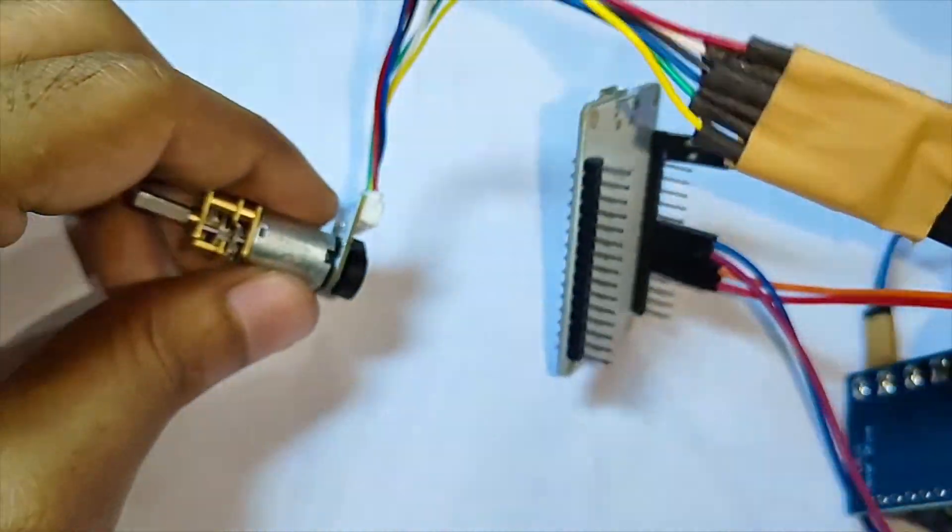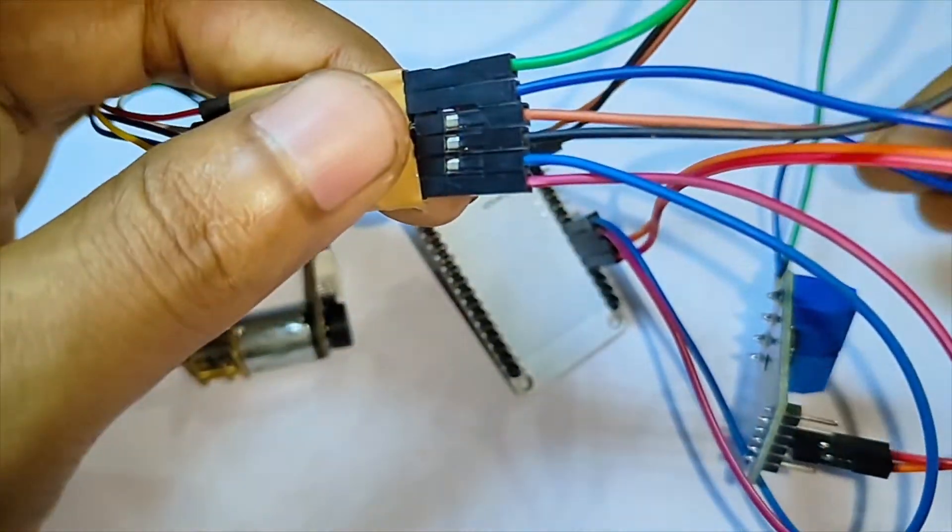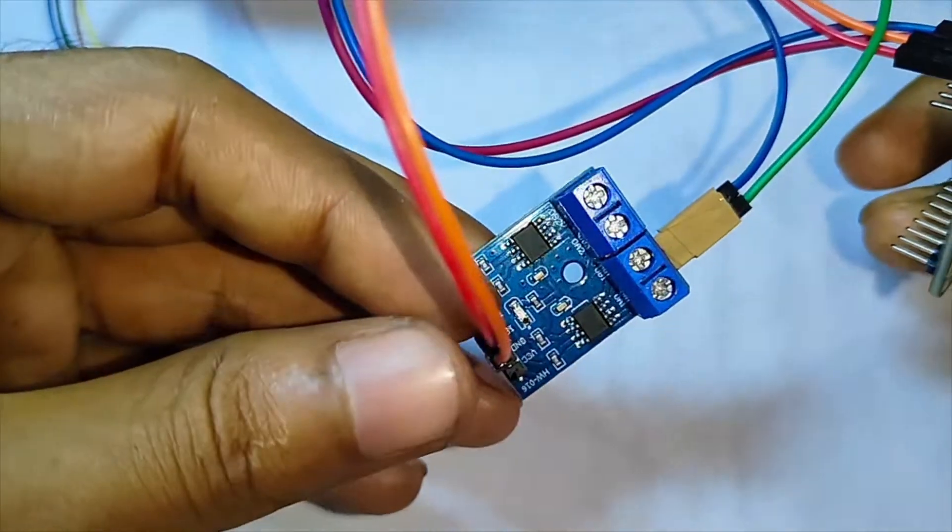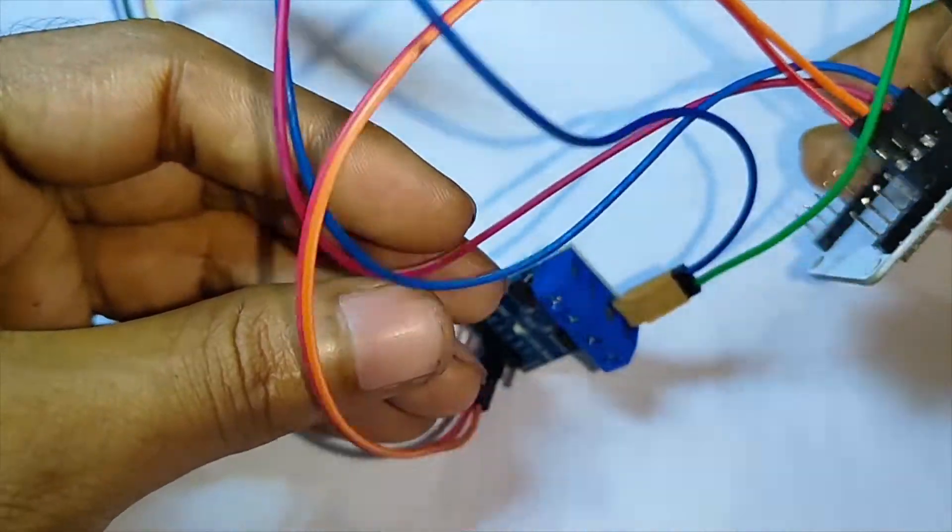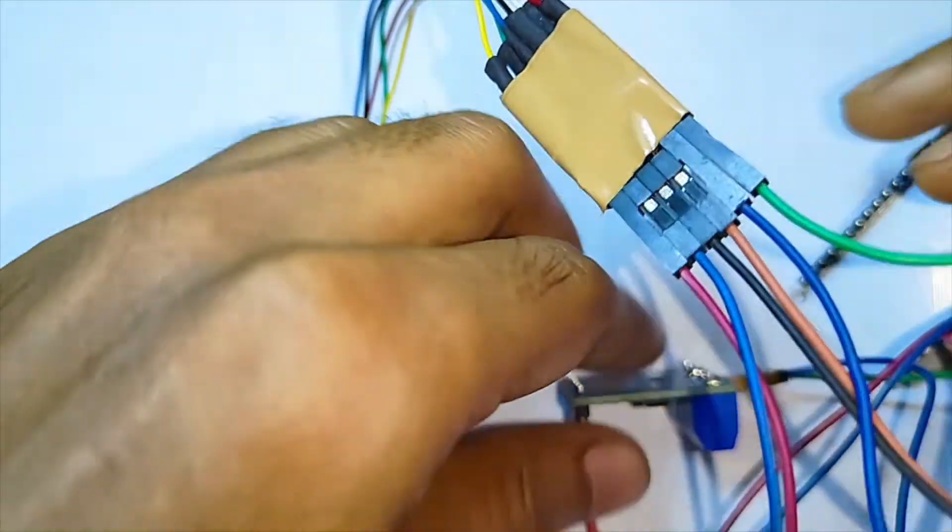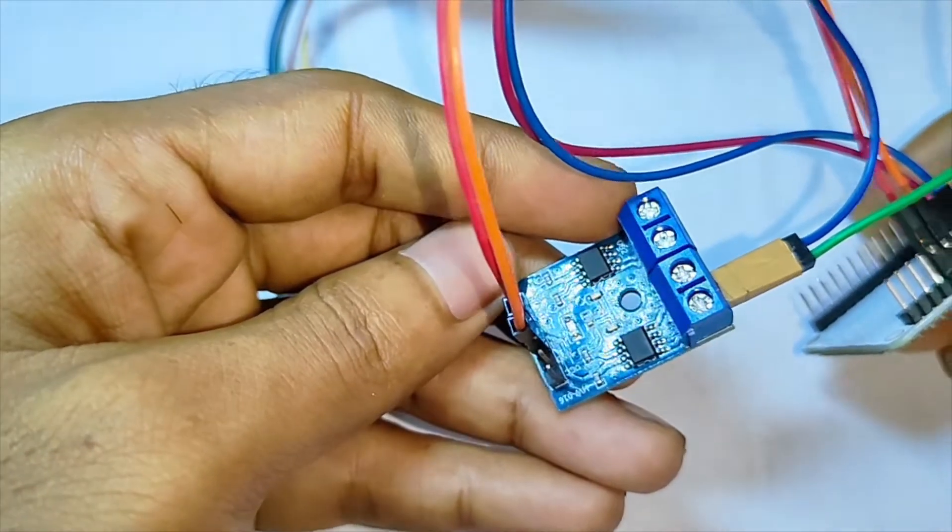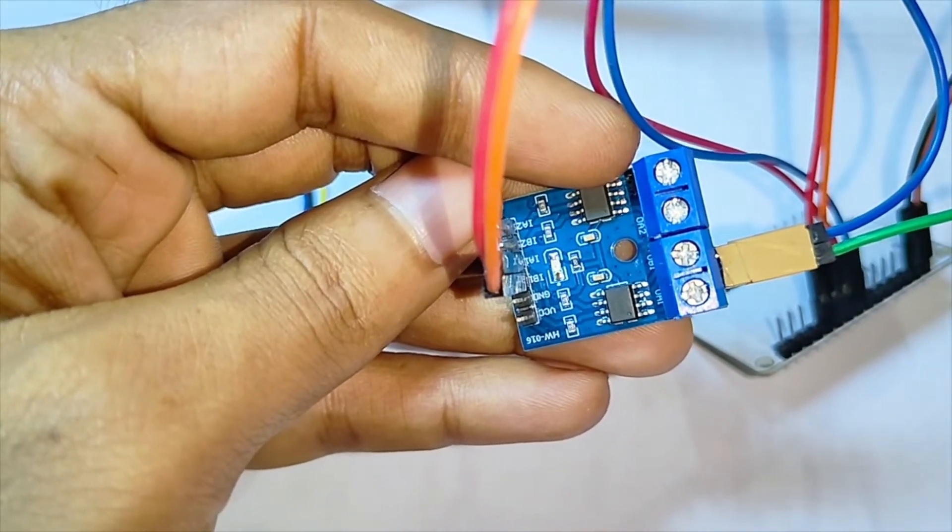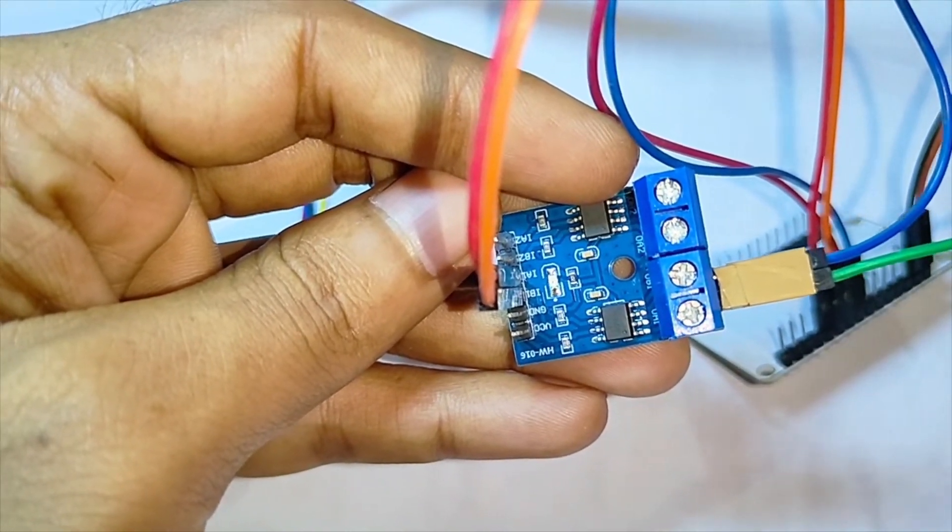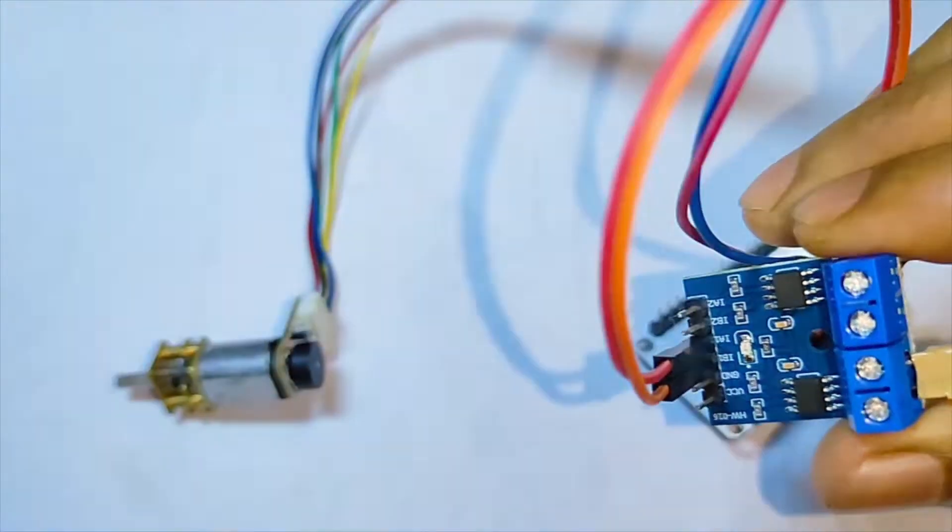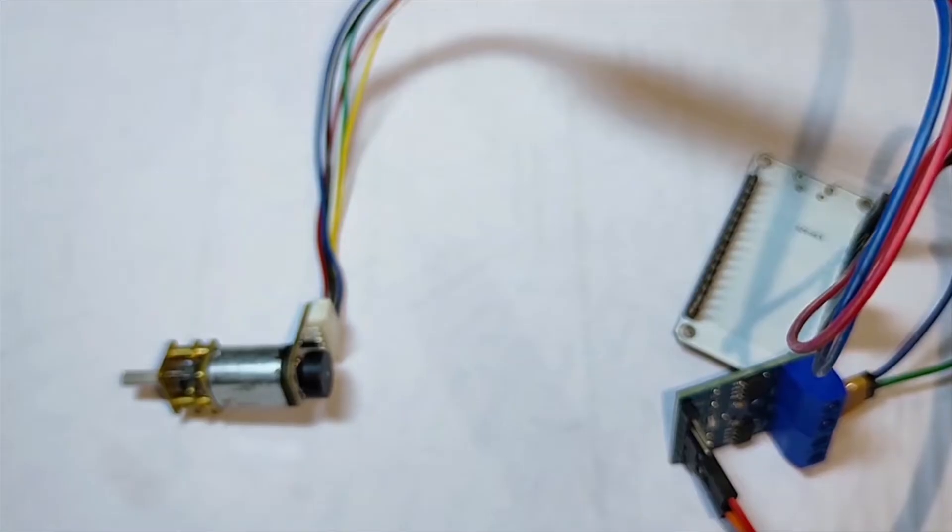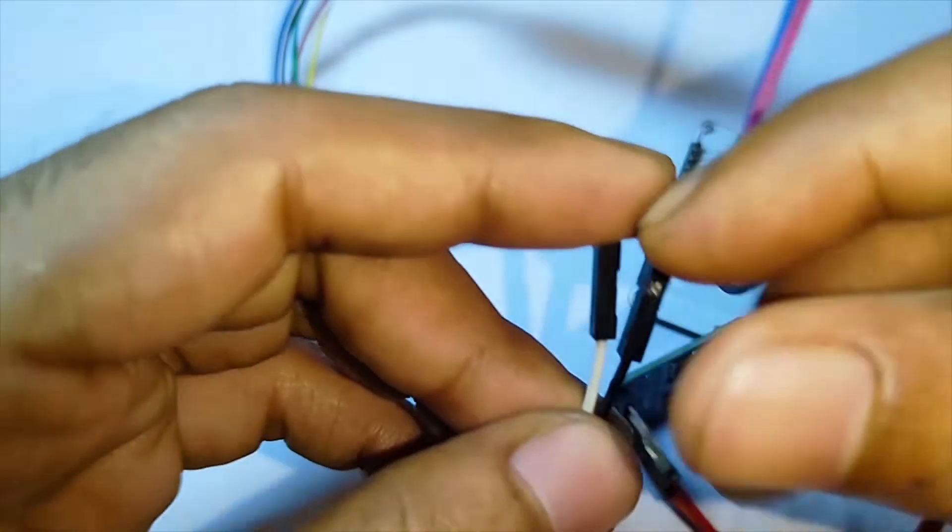With that, the N20 motor wires are completely connected to the ESP32 and L9W10S module. Now, I am going to connect the external power supply to the VCC and ground of the L9W10S motor driver.